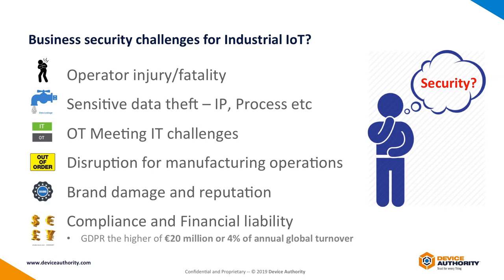The key things in there are things like operator injury and fatality. In industrial settings you might have PLCs connected to large machines or industrial equipment. The last thing you want is to have that machine tampered with and cause an explosion, for example. Equally, things like sensitive data theft, revenue protection, IP leakage, and process information which is stolen about your components and production line is really key. I've got a slide on that in a few slides' time to talk about how to approach protecting that sensitive IP.